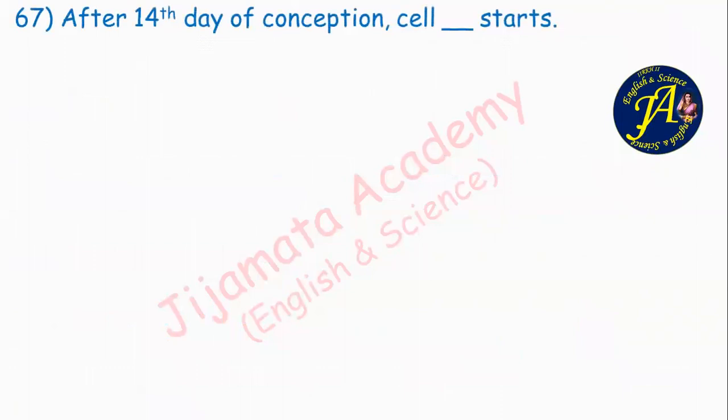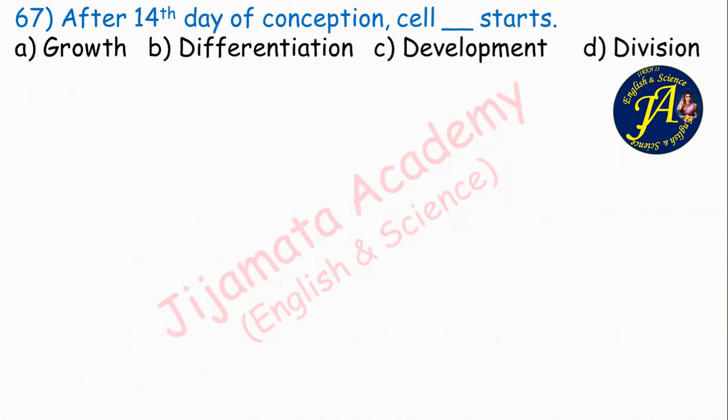After the 14th day of conception, cells dash starts. Options are sales growth, differentiation, development, division. Correct answer is option B: cell differentiation starts from the 14th day of conception.